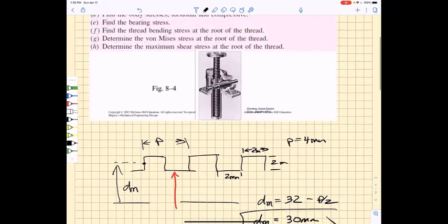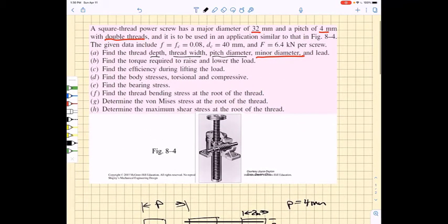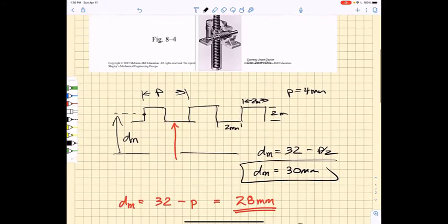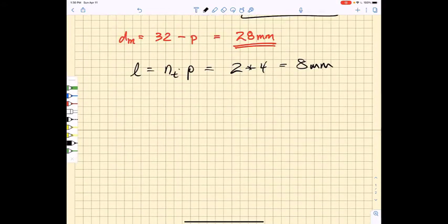The reason we need all that is because we need to understand how to calculate the torque required, which is this second question right here, to raise and lower the load. The torque required to raise the load is going to be the torque against thread friction with that load, and I have to add to that the collar friction term.